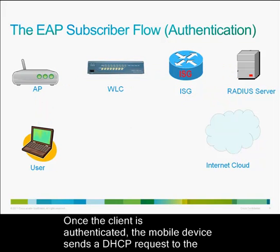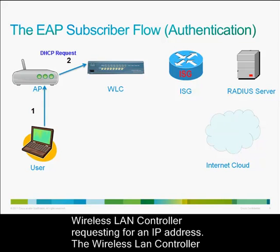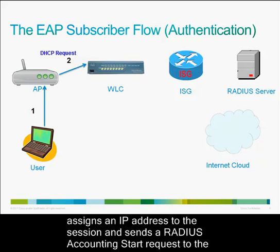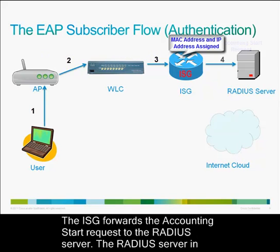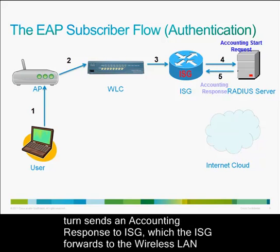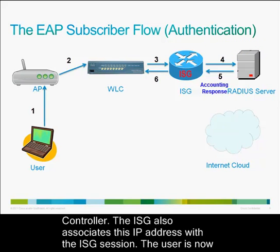Once the client is authenticated, the mobile device sends a DHCP request to the wireless LAN controller requesting an IP address. The wireless LAN controller assigns an IP address to the session and sends a RADIUS accounting start request to the ISG. This request includes the client MAC address and the IP address assigned to the client. The ISG forwards the accounting start request to the RADIUS server, which sends an accounting response back to the ISG, which the ISG forwards to the wireless LAN controller. The ISG also associates this IP address with the ISG session.